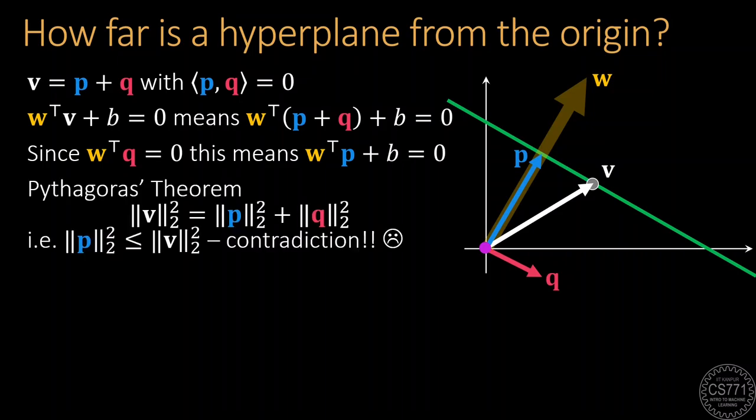What is more interesting is that by Pythagoras' theorem, we know that the squared Euclidean norm of V is equal to the sum of the squared Euclidean norms of P and Q. This means that V could not have been the closest point unless Q equals 0. We are thus forced to conclude that the closest point must be given by a vector completely parallel to W.